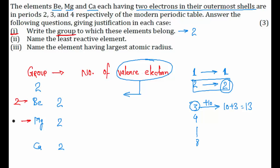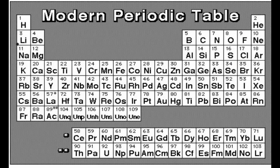Beryllium is in the second period, magnesium is in the third period, and calcium is in the fourth period. You can verify this on the periodic table as well — beryllium in period 2, magnesium in period 3, calcium in period 4, all in group 2.